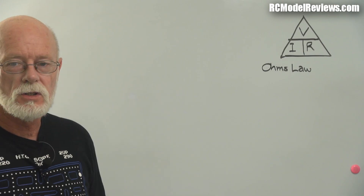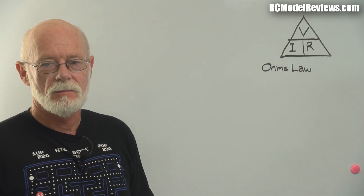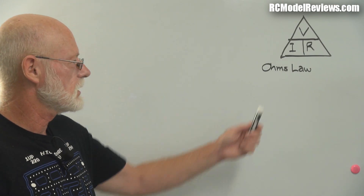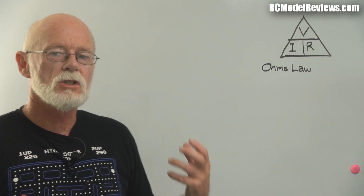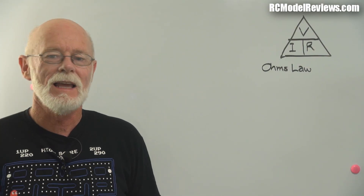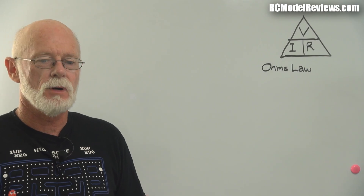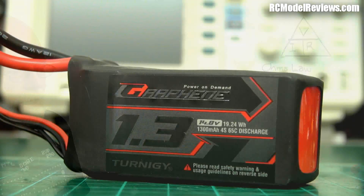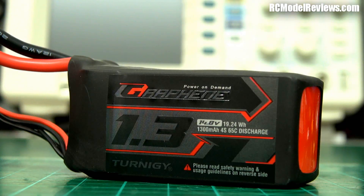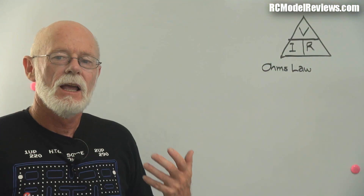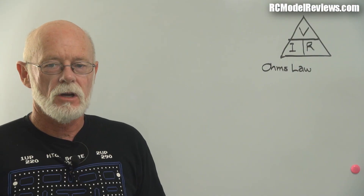G'day and welcome back to RC Model Reviews. Today I want to talk about something very fundamental but very important — it's called Ohm's Law. Ohm's Law describes and enables us to calculate the way that electricity flows through a circuit. I'm doing this video as a precursor to the reviews of the Turnigy Graphene batteries, because I want to talk about some really fundamental issues such as internal resistance. But until I've explained what resistance is, what voltage is, what current flow is, and what power is, it wouldn't be much use doing that video.